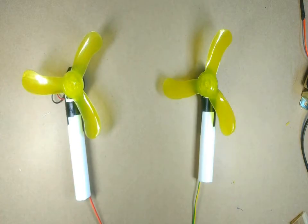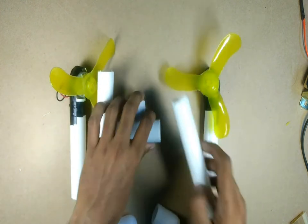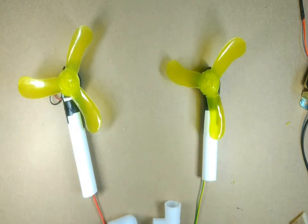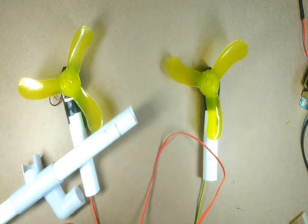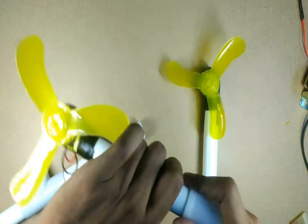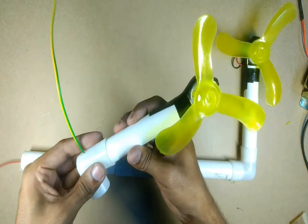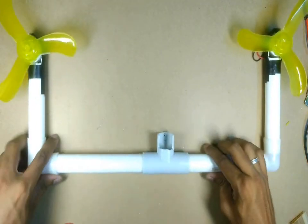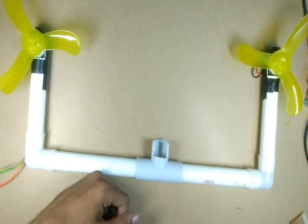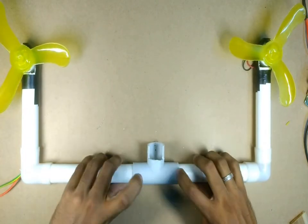To construct the frame for the fans I am using a T joint, two small PVC pieces, and two L joints. I have cut out the front piece of the T joint to make it flexible to fit to the window.